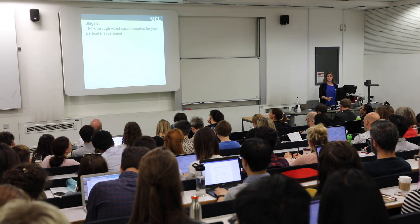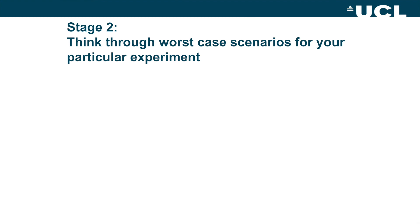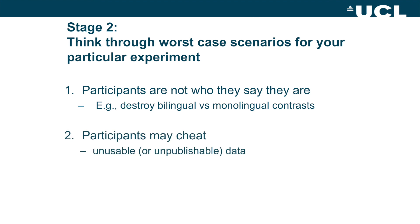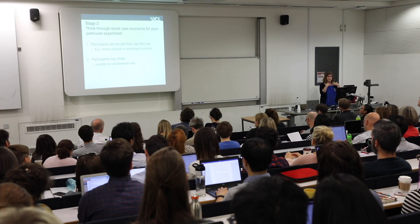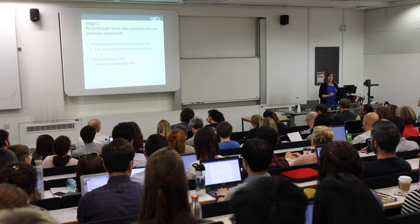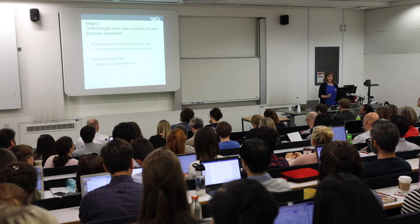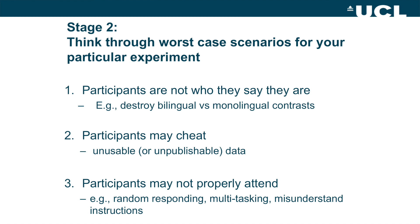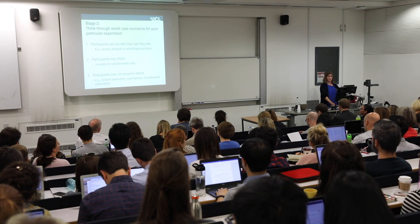Once you've specified your concerns, think about the worst-case scenarios — how could these concerns destroy your experiment? If participants aren't who they say they are — for example, if you're comparing monolinguals versus bilinguals but they're actually the same kind of people — you won't get meaningful data. If participants cheat, your data may be unusable, or importantly, unpublishable — and those are two different things. You need to build in safeguards not just to persuade yourself the data quality is fine, but to persuade sceptical reviewers. What's the worst thing that could happen — will inattentive participants just add noise, or will they systematically invalidate your theoretical conclusions?